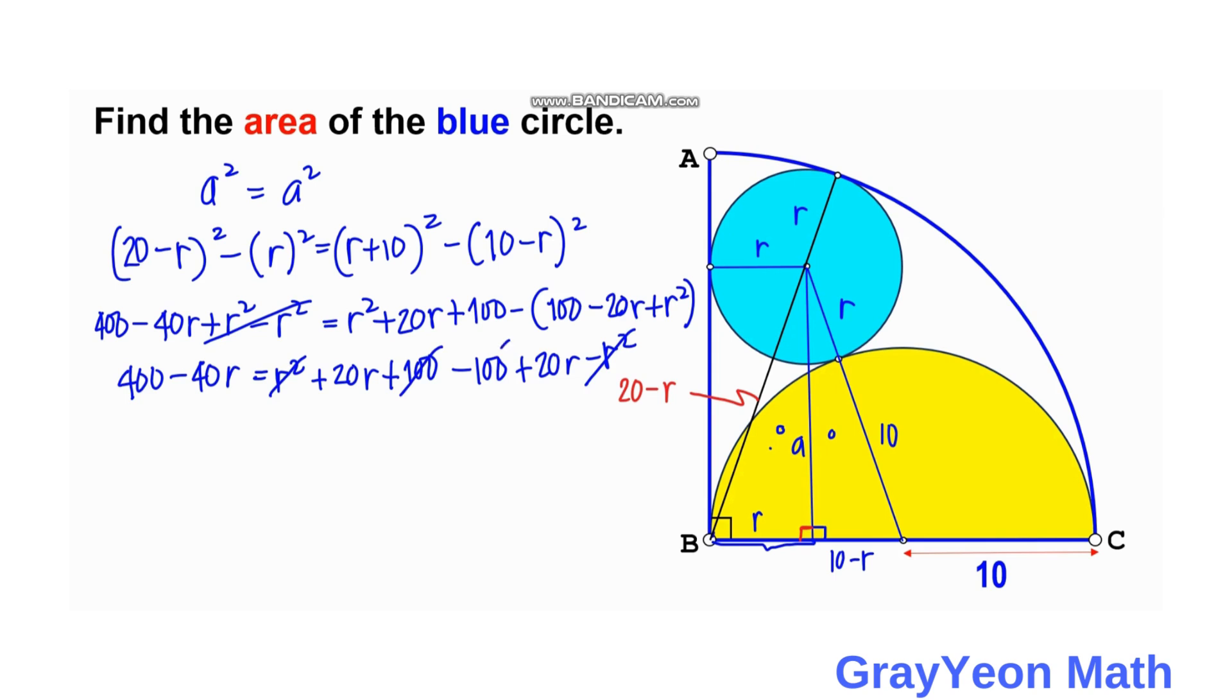So this cancels out r squared and minus r squared, 100 and minus 100, and 20r. So 40r on the right hand side. So we just combine these two, and 400 minus 40r.